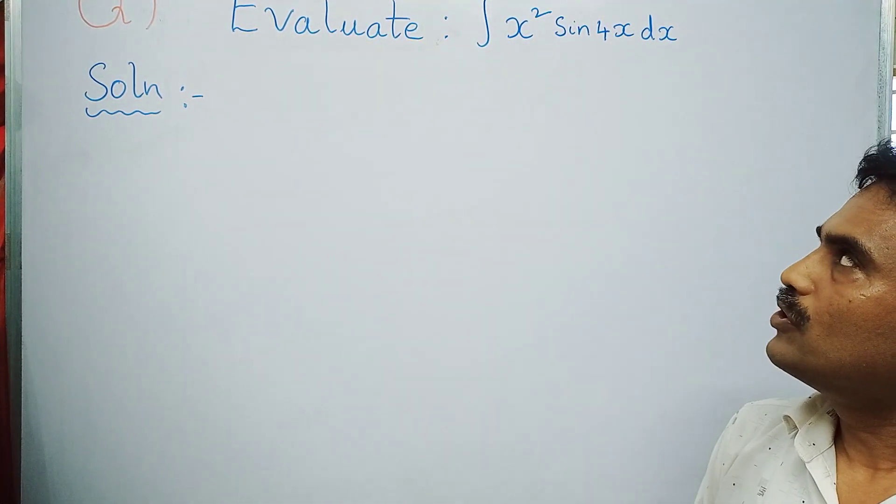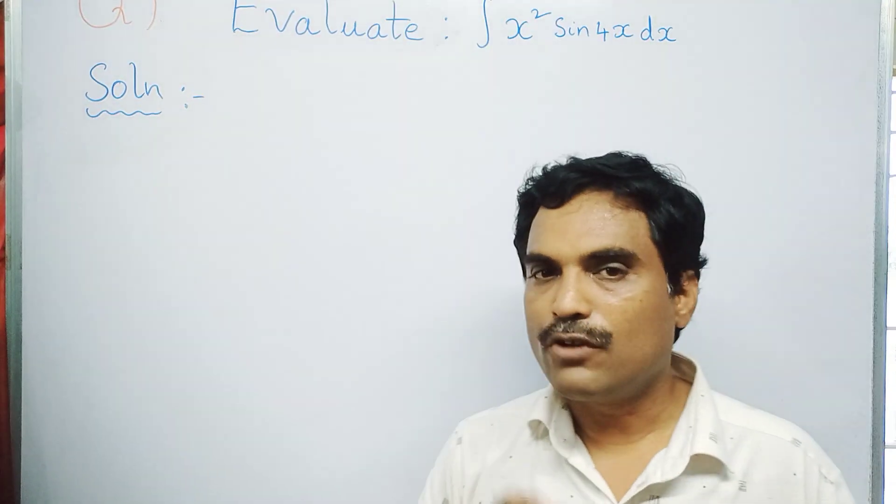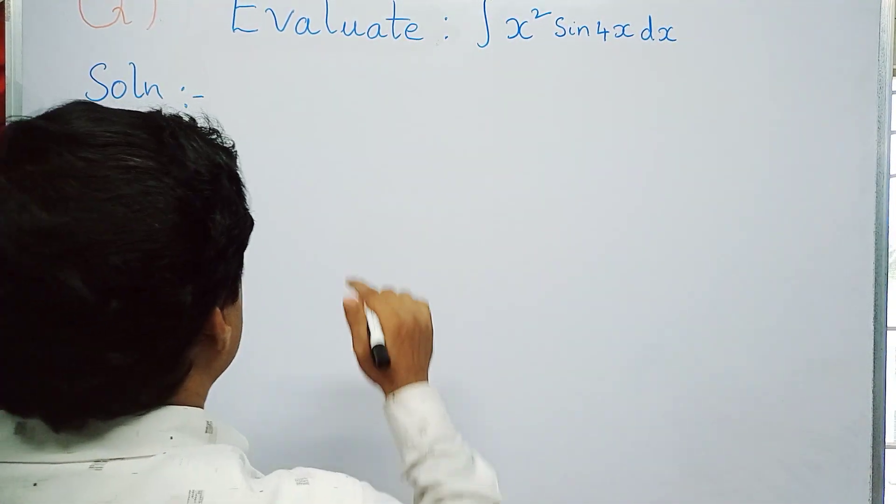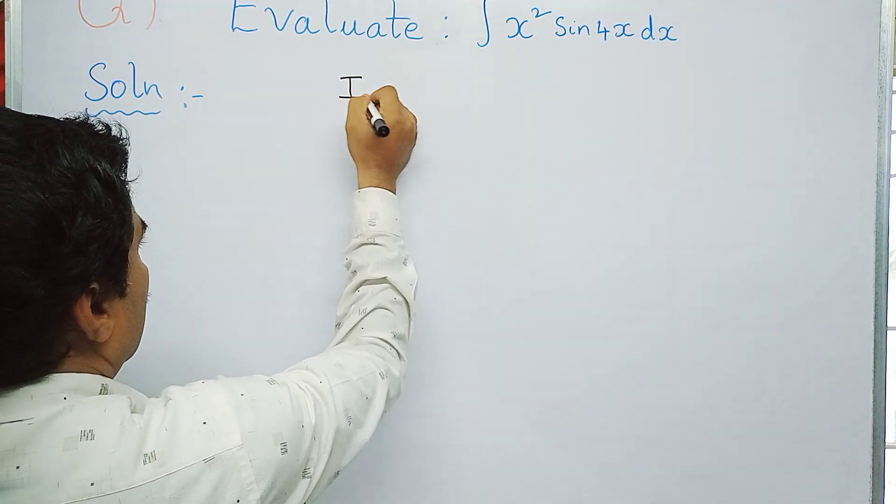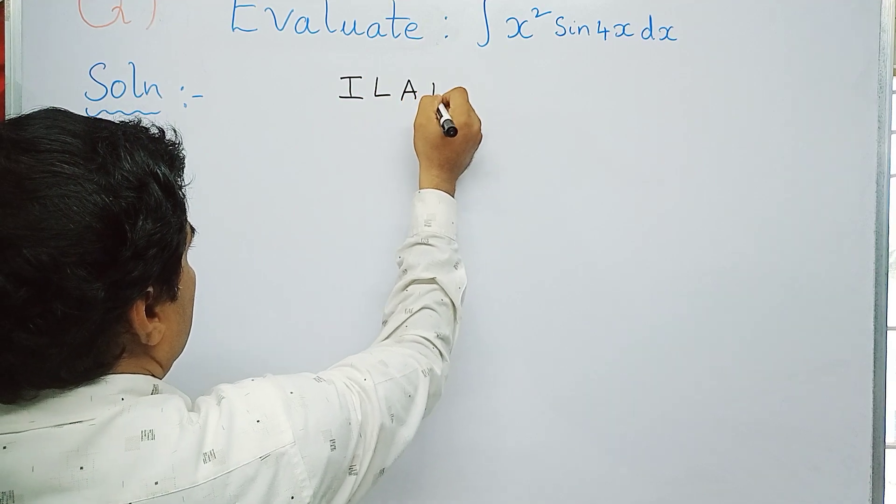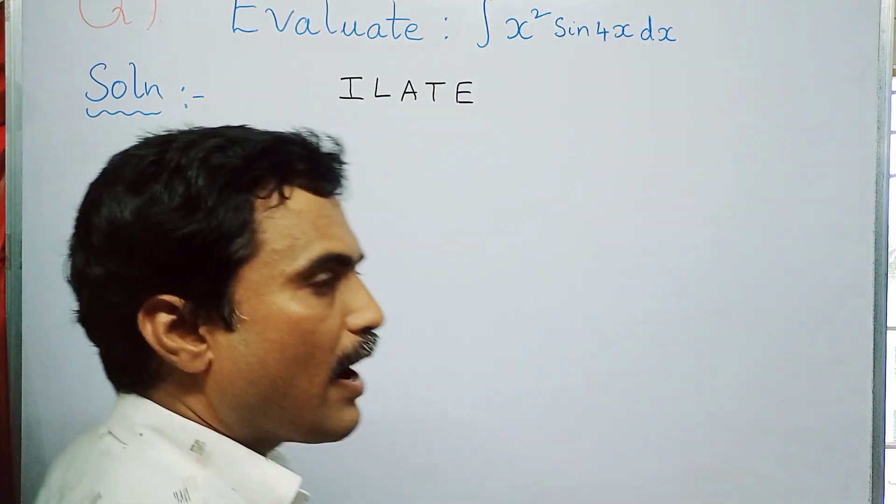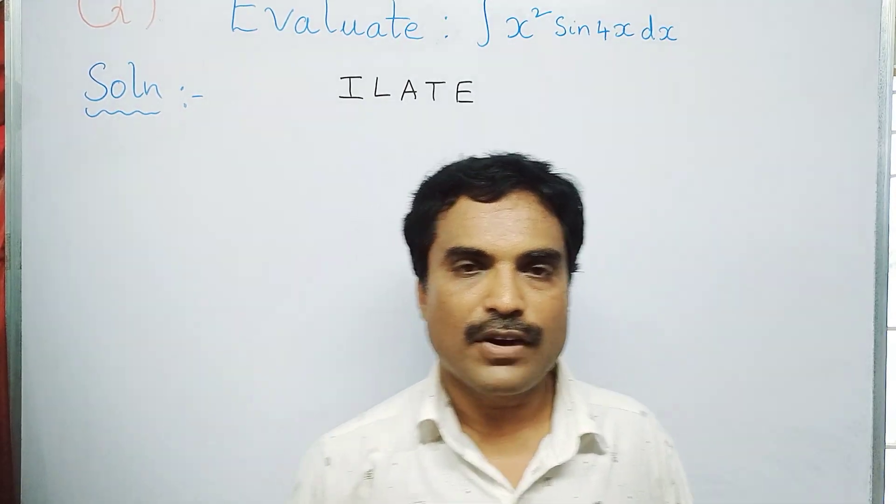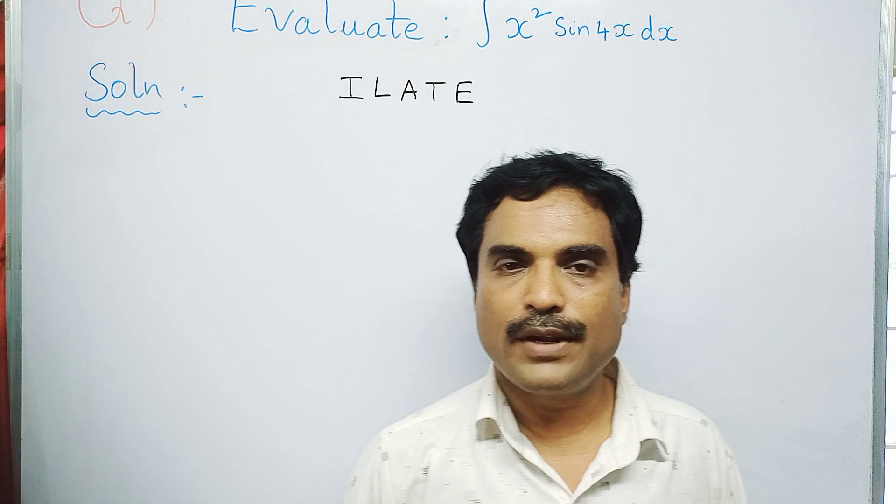To solve this problem, first we choose u and dv by using the term ILATE. So first write the term ILATE here: I, L, A, T, E. Here I stands for inverse trigonometric functions, L stands for logarithmic functions, A stands for algebraic functions, T stands for trigonometric functions, and E stands for exponential functions.